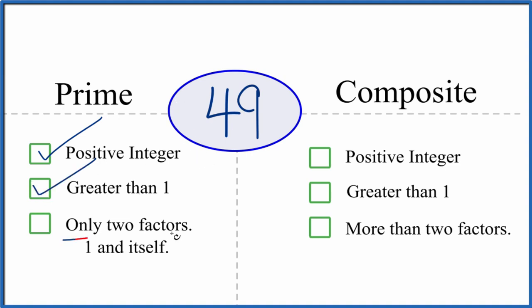And are there only two factors, 1 and 49, that go evenly into 49? So 1 times 49 equals 49. That's two factors. But are there any other factors, any numbers that will divide evenly into 49? 7 times 7 equals 49. So there are more than two factors, meaning 49 is not a prime number.